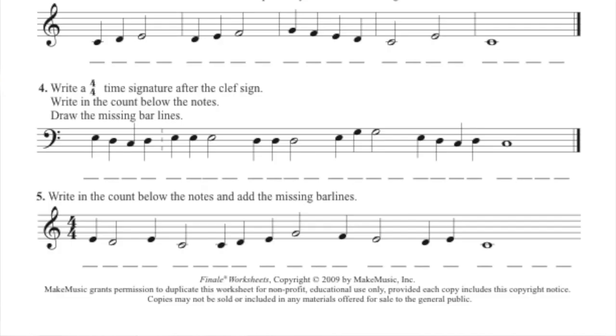In exercise number four, it says write a 4-4 time signature after the clef sign, write in the count below the notes, and then draw in the missing bar lines. So now it's your job to count one, two, three, four beats, and then draw the missing bar line. So make sure that you account for what's a quarter note, what's a half note, what's a whole note, and how many beats those notes get.